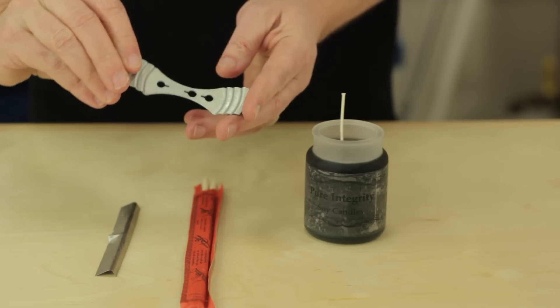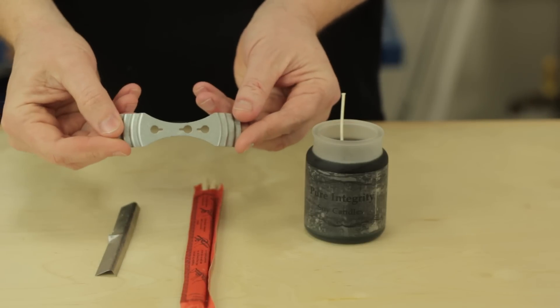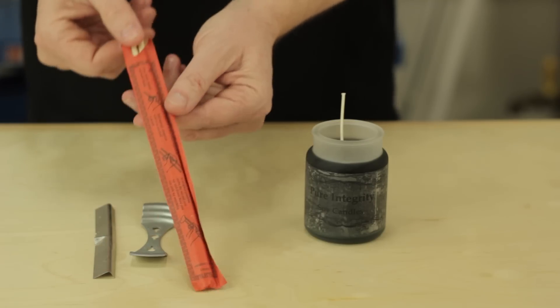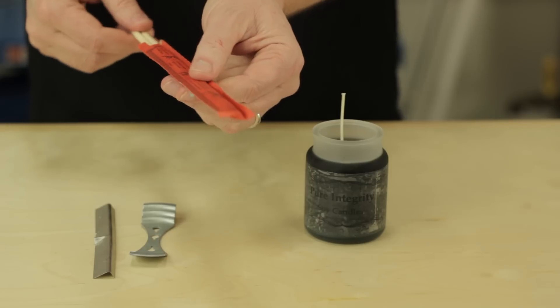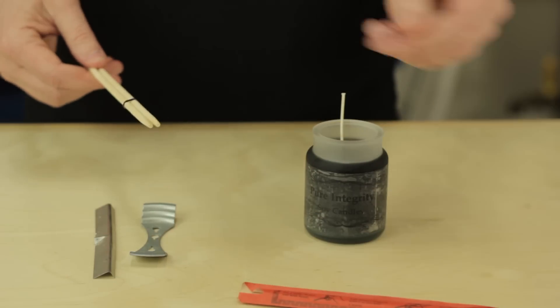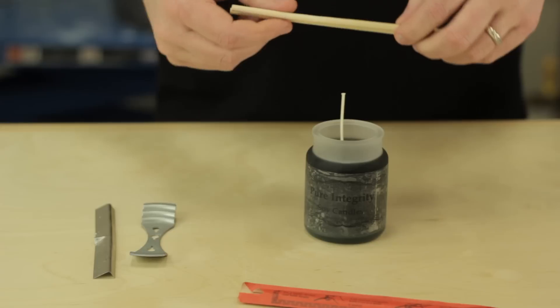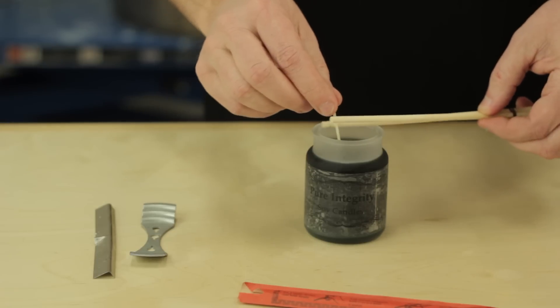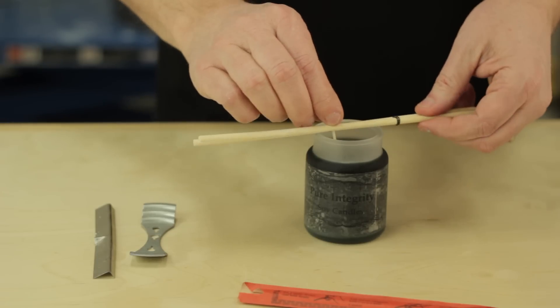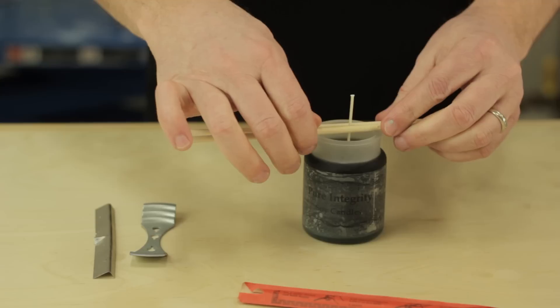You're going to need a device to hold the wick upright. Now this is what we use in our studio, but here's a great idea for the kids. Here I have a set of chopsticks that we wrapped a rubber band around. Gently set them over the wick and slide the wick in between the two chopsticks, and this works perfectly as a wick holder.